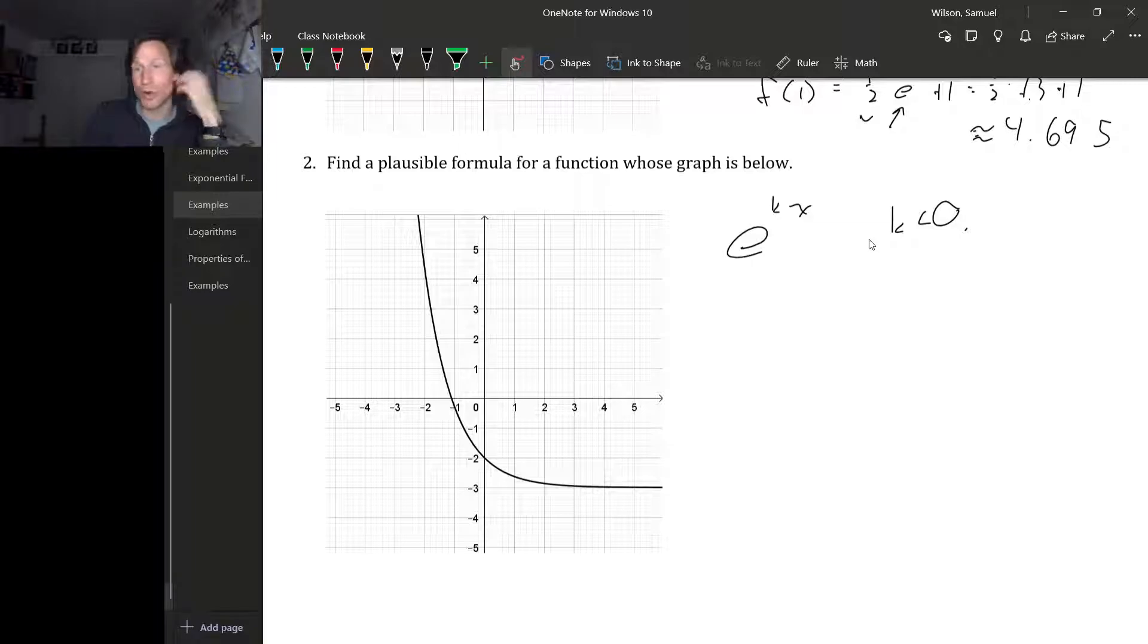But we don't know what negative number. An unshifted exponential will have a horizontal asymptote at 0. This has a horizontal asymptote at -3. So it looks like we've taken this exponential decay and shifted it down 3.